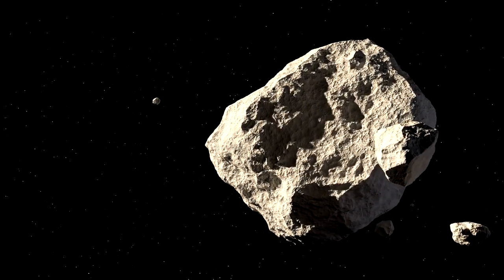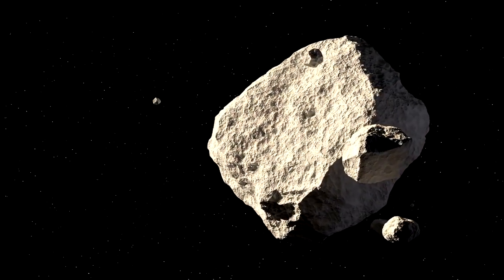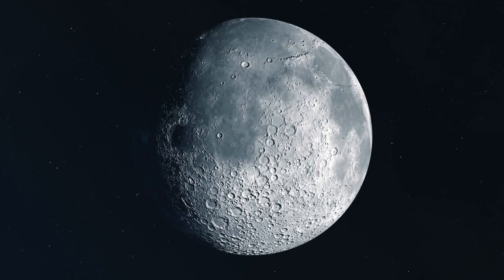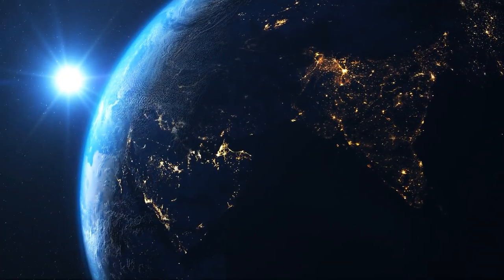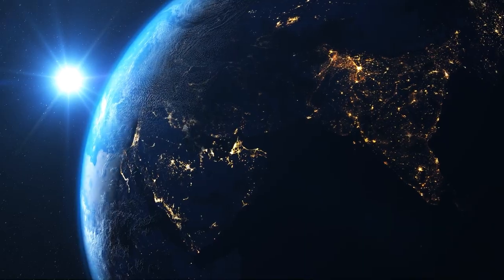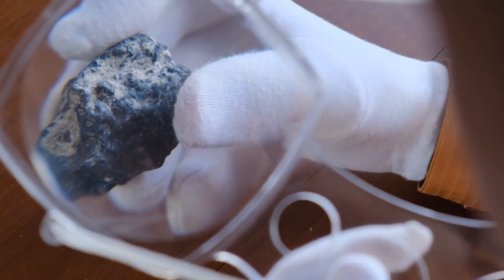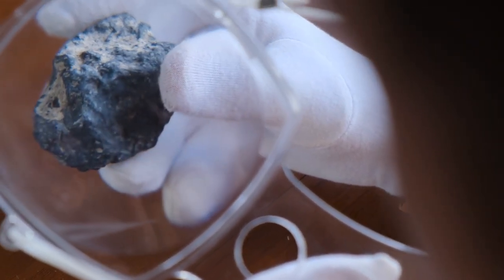NASA claims that DART hit the tiny asteroid Dimorphos in an attempt to slightly alter the orbital speed of the moonlet. Dimorphos does not represent a threat to Earth, but the ambitious mission simulates the actions NASA scientists would take in the event that an asteroid was heading in our direction.